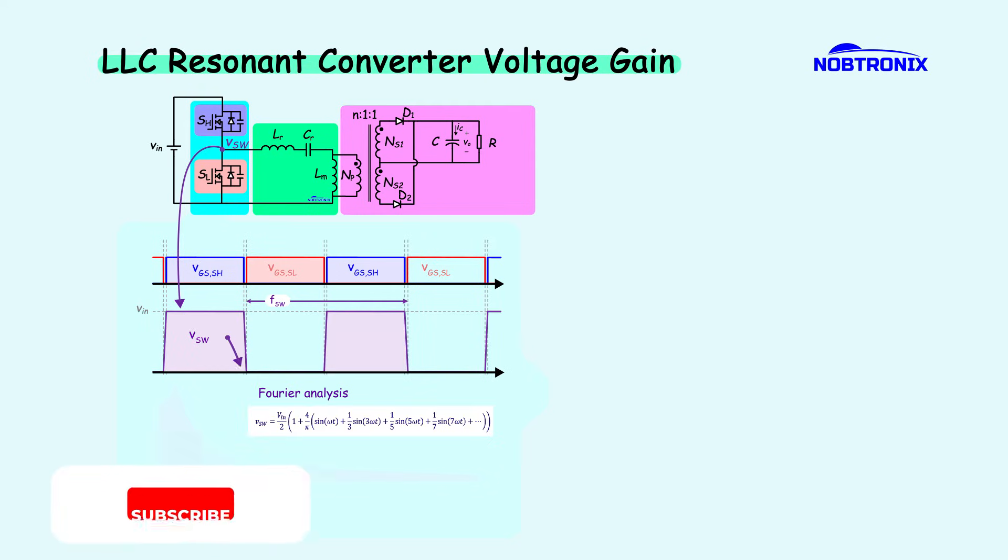By performing a Fourier analysis on this waveform, we obtain the following expression, showing that the DC component is VIN divided by 2. Since the waveform is symmetric, it contains only odd harmonics. The DC component is blocked by the resonant capacitor, preventing it from reaching the resonant tank. Higher-order harmonics are filtered out by the resonant circuit and do not contribute to power transfer. This means only the fundamental harmonic remains with a peak value of 4 divided by pi multiplied by VIN divided by 2.